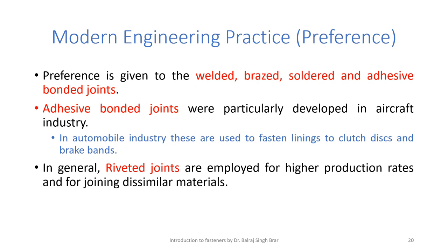Once all the joints have been discussed, let us discuss some preferences in modern engineering practice. Preference is given to welded, brazed, soldered, and adhesive bonded joints because they are lighter in weight. Adhesive bonded joints were particularly developed in the aircraft industry. In the automobile industry, they are used to fasten linings to clutch discs and brake bands. Riveted joints are employed for higher production rates, for joining dissimilar materials, and are cheap in construction with less skill required.